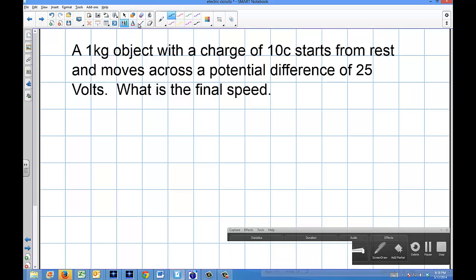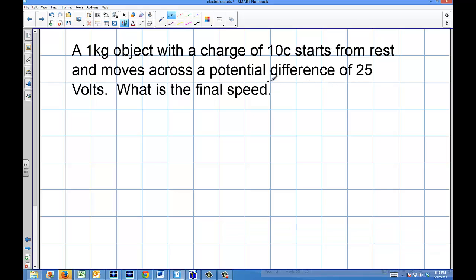Okay, in this problem we have a 1 kilogram object with a charge of 10 coulombs and it starts from rest and moves across a potential difference of 25 volts. What is the final speed?